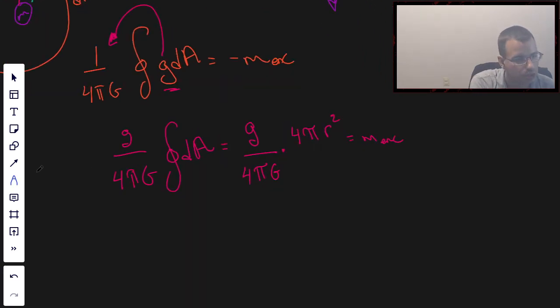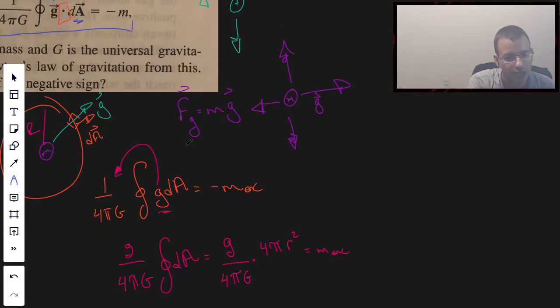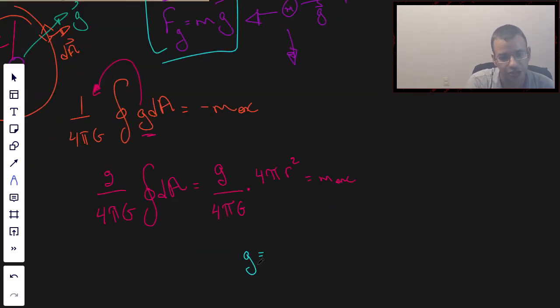Rearranging this, we are going to get g, which from up here we said that the force due to gravity is going to be mass times the gravitational field. So we can also call this force gravity over mass. I'm going to call this mass 1. Equals, these cancel, mass enclosed, which I'm just going to call mass 2, divided by r squared.